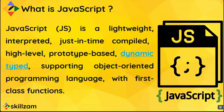Dynamic typing means the opposite of static typing. When a programming language is dynamically typed, the interpreter assigns a variable type at runtime. Most dynamic programming languages are dynamically typed, and they are frequently referred to as scripting languages. JavaScript, Python, Ruby, and PHP are all dynamically typed programming languages.